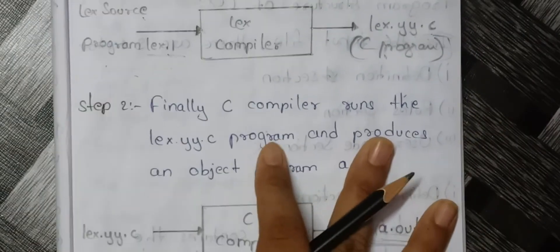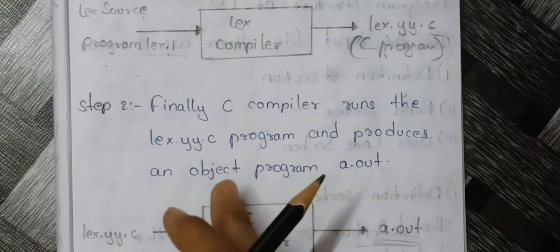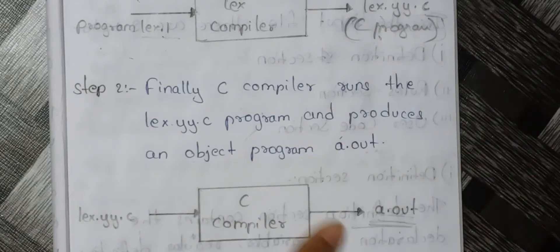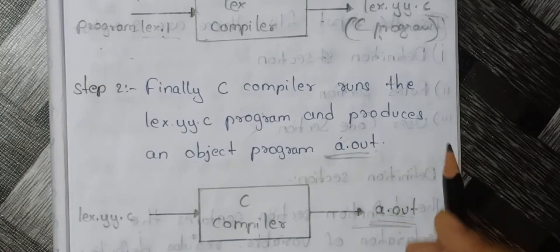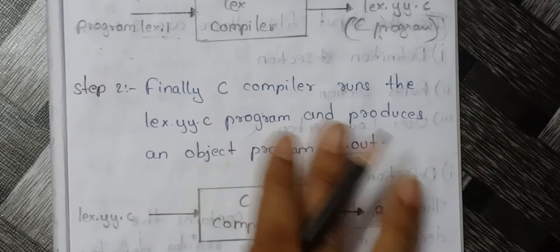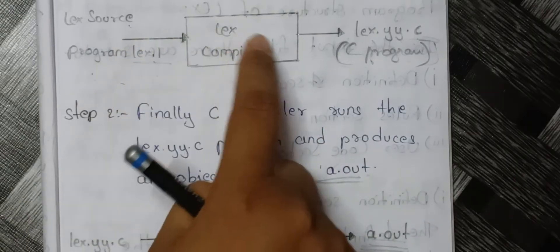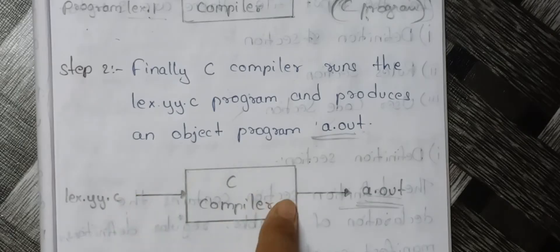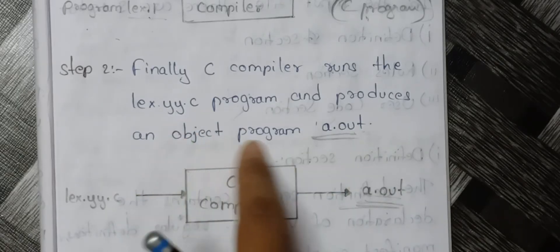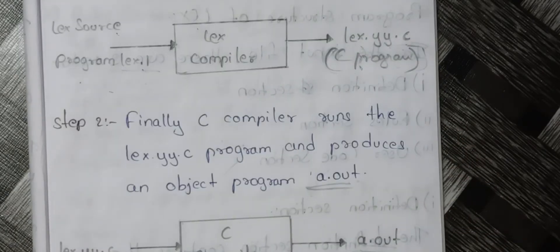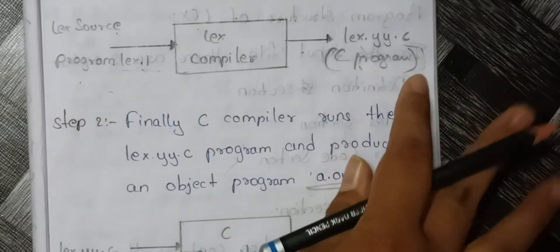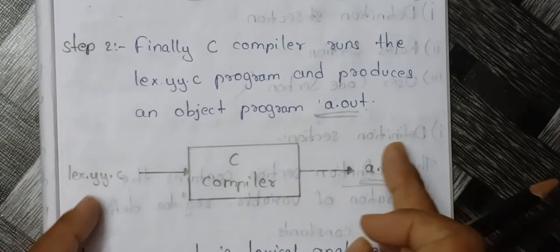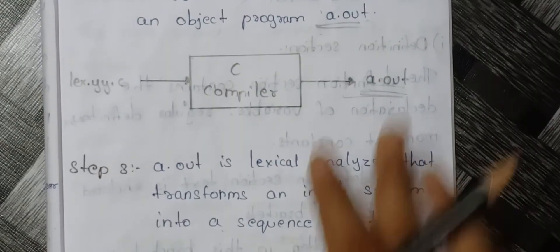Second step: finally, the C compiler runs the lex.yy.c program and produces an object program a.out. So the C compiler takes lex.yy.c and outputs a.out. To summarize: lex.l → lex compiler → lex.yy.c → C compiler → a.out.